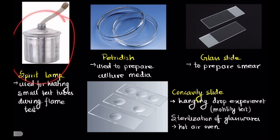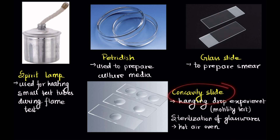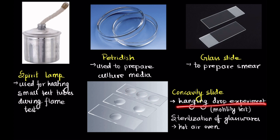Spirit lamp is used for heating small test tubes during flame test. Petri dish is used to prepare culture media. Glass slides are used to prepare smears, like the smear of gram positive and gram negative bacteria. Concavity slides contain concave surfaces on the slide, and these concave surfaces allow for the hanging drop experiment for motility test.